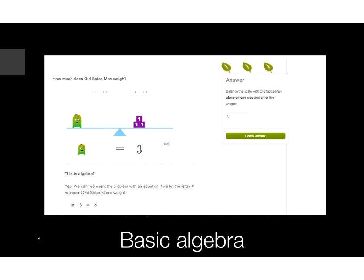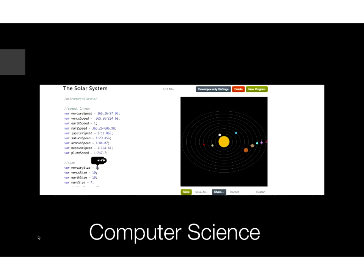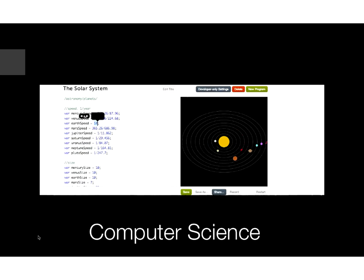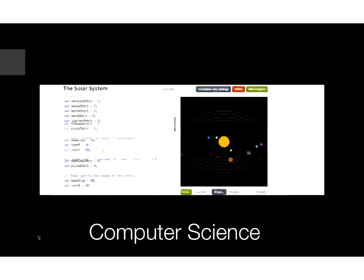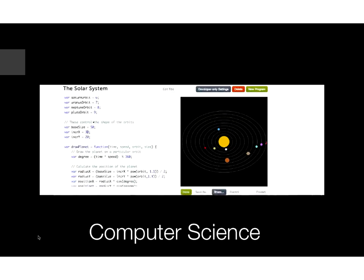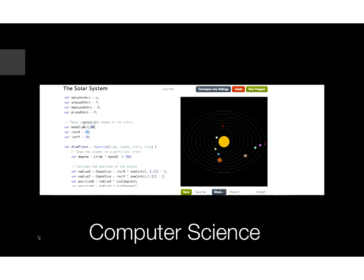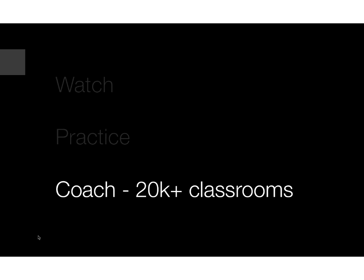We also have a computer science platform. The idea is to make it as accessible and immediate for beginners as possible, to really allow students to express their creativity. Here you can actually manipulate variables on the left-hand side and see the impact happen immediately on the right-hand side. Students can write code and see it manifested immediately. They can ask: what if gravity were different, or what if the planets were different sizes? How can I simulate that to understand the solar system better? There are lots of examples of scientific concepts simulated through our computer science platform.